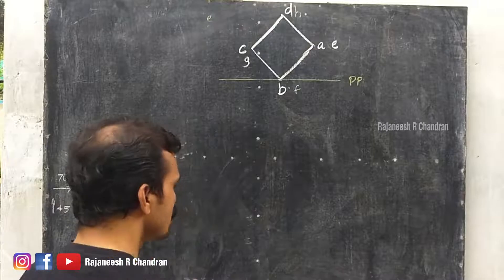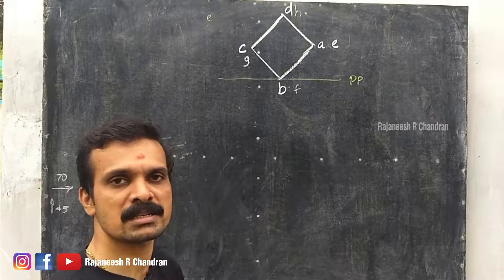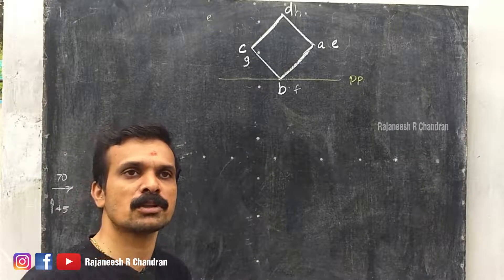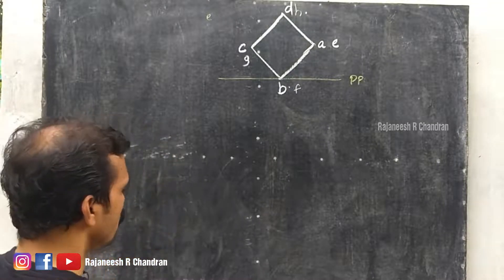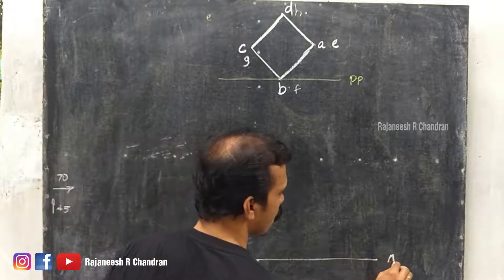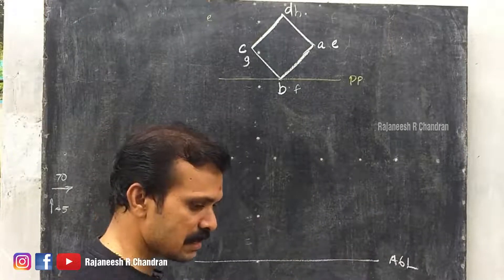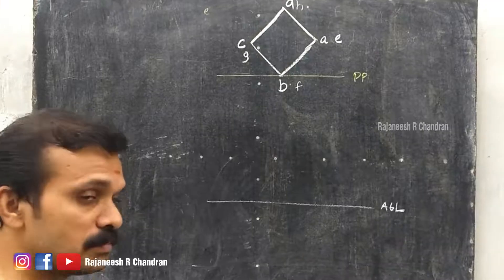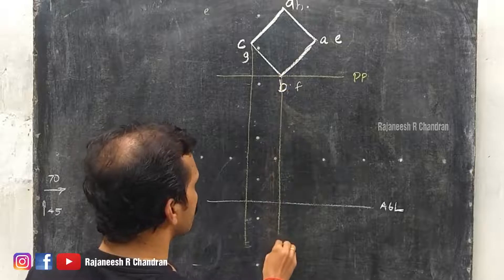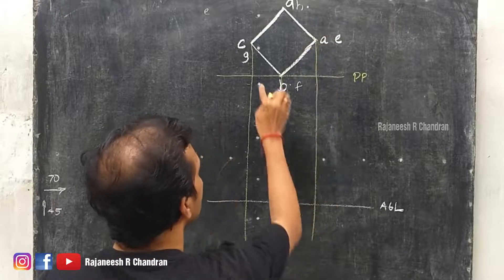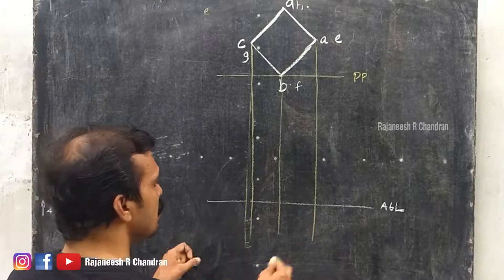In the previous questions we were drawing the ground line, but in this question the solid is placed on the auxiliary ground line, so no ground line is needed. Instead, we draw a line called the auxiliary ground line. Draw the projections from the top view downwards.